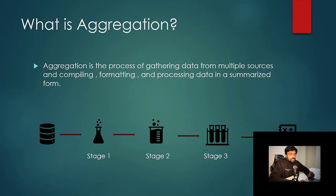So you start with multiple collections in a database, and in each stage you do some operations on top of it. Each output from each stage becomes the input for the next stage, and that is how aggregation works.